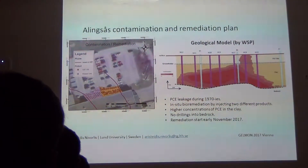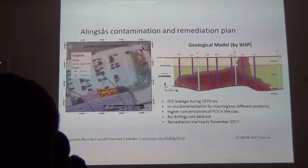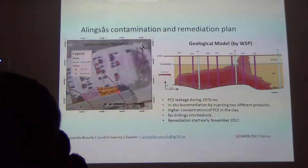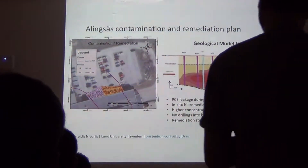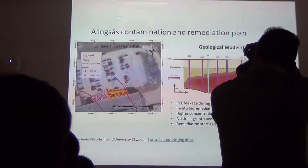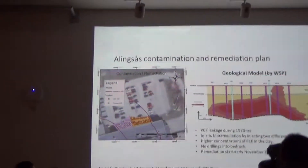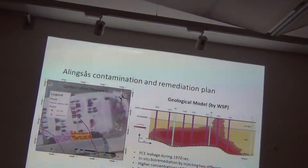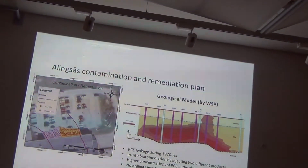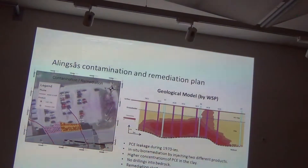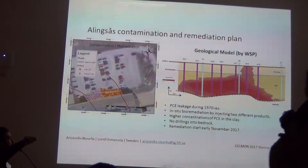Here you can see an overview of the site. This is the main building, and this is the plume, which is in place. The geological model is quite simple — we mostly have clay and some sand just above the bedrock, and most of the contamination is inside the clay.